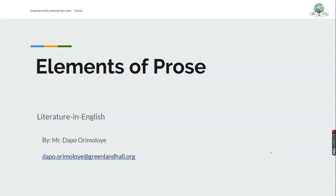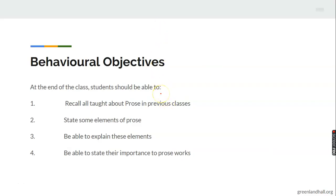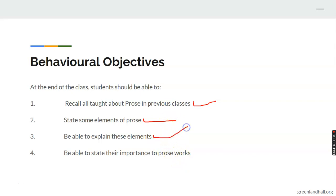Let's examine our objectives for this class. After this class, we should be able to recall all thoughts about prose from previous classes. We should be able to state some elements of prose, explain them, and state their importance in prose work.